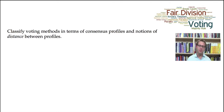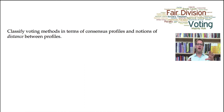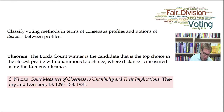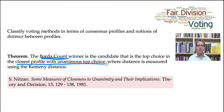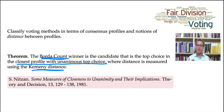So the question now becomes: can we classify methods in terms of consensus profiles and an appropriate notion of distance between profiles? This idea of finding the closest consensus profile depends on what notion of distance we're actually using. Here's a nice result: the Borda count winner is the candidate that is the top choice in the closest profile with unanimous top choice, where the distance is measured using Kemeny distance. So Borda count can be characterized in terms of unanimous top choice as the consensus notion, and Kemeny (or swap) distance as the distance notion.